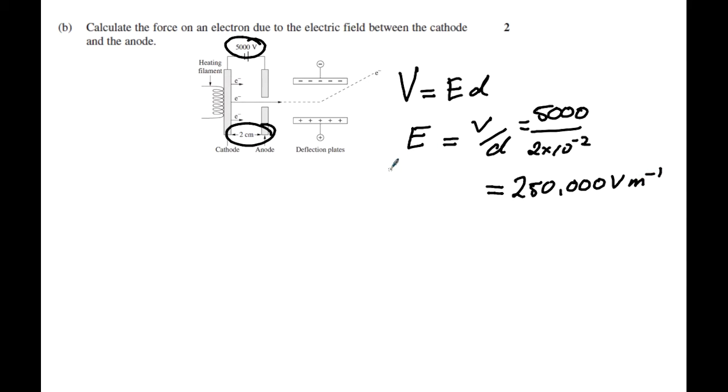Now that we've got the electric field we can now determine the force. The next formula of course is F equals Eq, which basically means E we just determined as 250,000, the charge is the charge of an electron which is 1.6 by 10 to the negative 19 coulombs, and as a result when you calculate that out you'll get 4 by 10 to the power of negative 14 newtons.